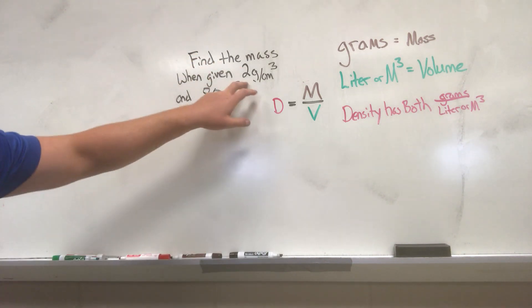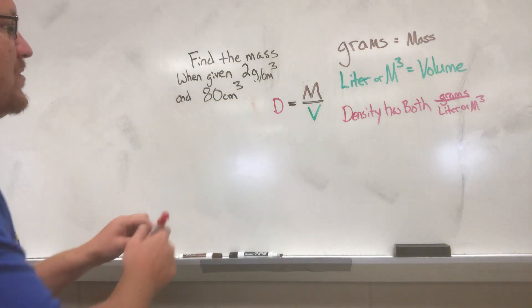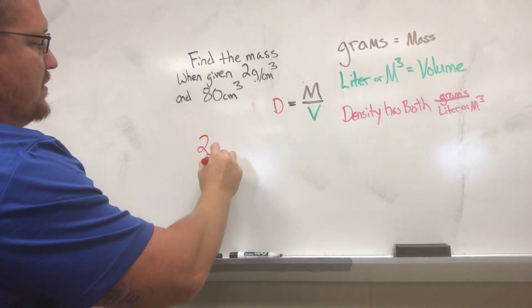So we know that this has both a mass and a volume unit, so this is our density. So we're going to put that in for our D: 2 grams per centimeter cubed.